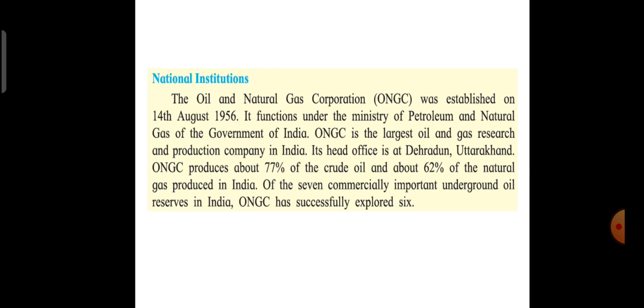Its head office is at Dehradun, Uttarakhand. ONGC produces about 77 percent of the crude oil and about 62 percent of the natural gas which is produced in India commercially. Of the seven important underground oil reserves in India, ONGC has successfully explored six.